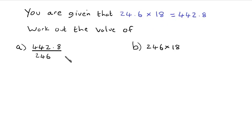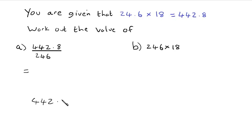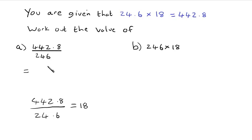In the first question, we're dividing 442.8 by 246. Because 246 is 10 times bigger than 24.6, and we're dividing by a bigger number, the answer gets smaller. So the answer will be 10 times smaller than 18. Therefore, the answer to 442.8 ÷ 246 is 1.8.